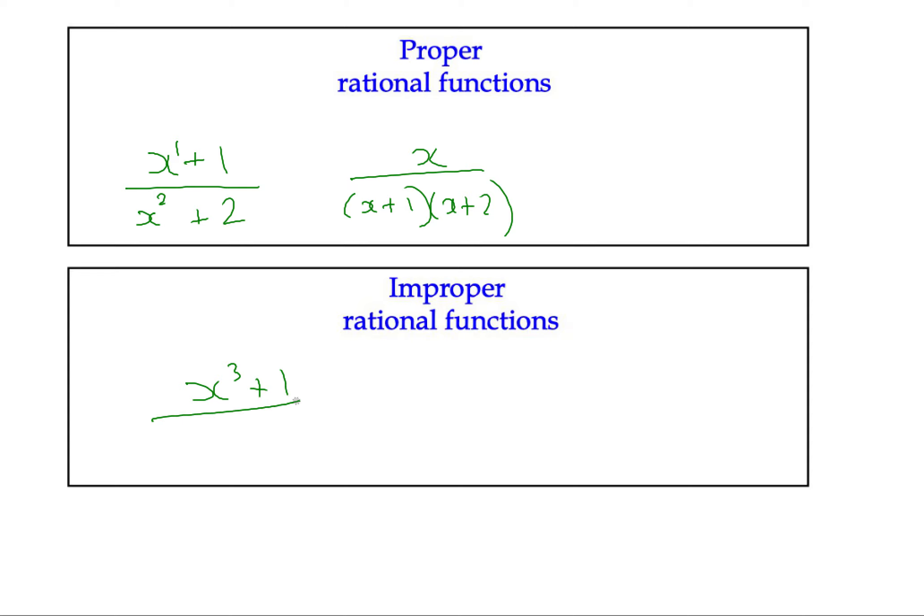And as I've described already, an improper rational function might look something like this. It'll be a bit scrappy. I think I'll improve that. Got to keep the standards. Okay. x cubed plus 1 over, say, x squared plus x minus 3. There's an improper rational function. And interestingly, what I want to also say is that if the order, if the degree is the same, then it also counts as an improper rational function.